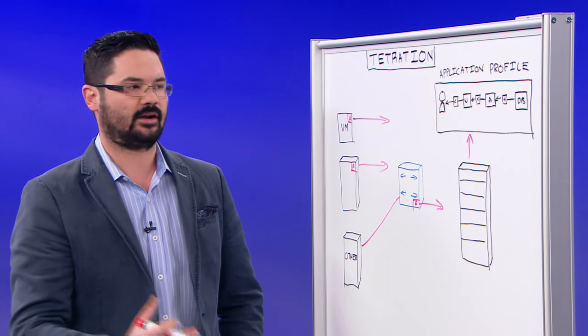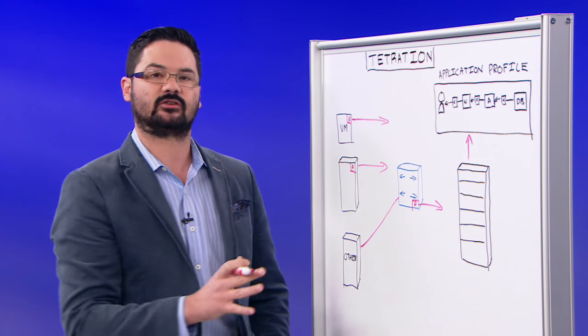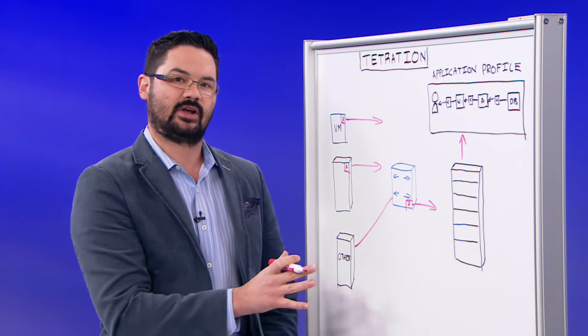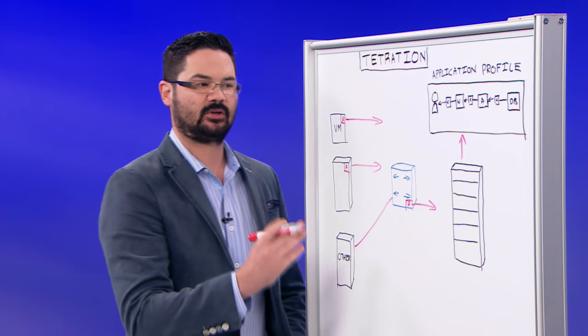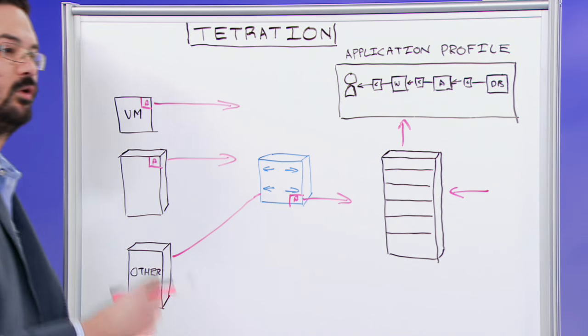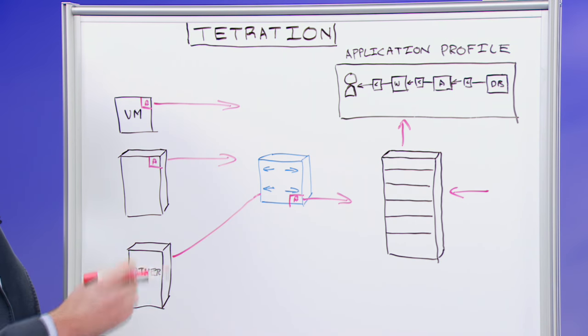So now we can start to look at what the Tetration appliance actually does for us beyond application dependency mapping. With all this flow data, the Tetration appliance is actually deduplicating all that data and storing an independent flow record or a deduplicated flow record for each flow that crosses your network.